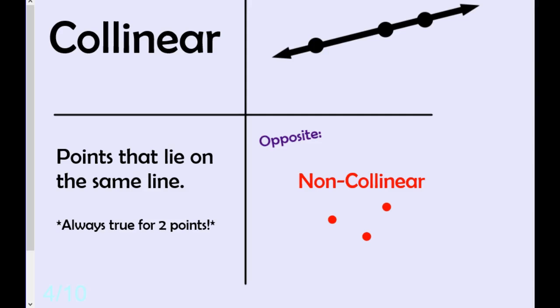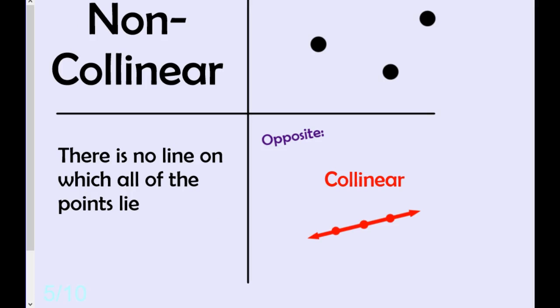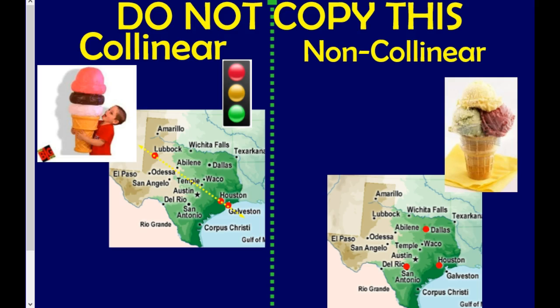Collinear, points that are on the same line, that share the same line. There are two points that are on the same line. And the opposite: points that are not on the same line.